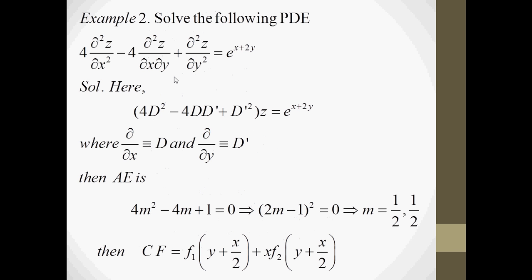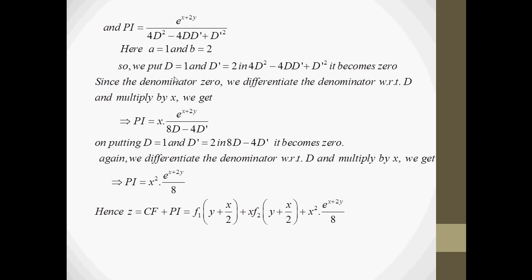Now we take another example. We convert the given equation into d and d' form using del/delx as d and del/dely as d'. We get 4d² minus 4dd' plus d'² times z equals e to the power x plus 2y. The auxiliary equation with d equal to m and d' equal to 1 is 4m² minus 4m plus 1 equals 0, with roots 1/2 and 1/2 — repeated roots. Applying the repeated roots formula, the complementary function is f₁(y + x/2) plus x·f₂(y + x/2). Now we find the particular integral.